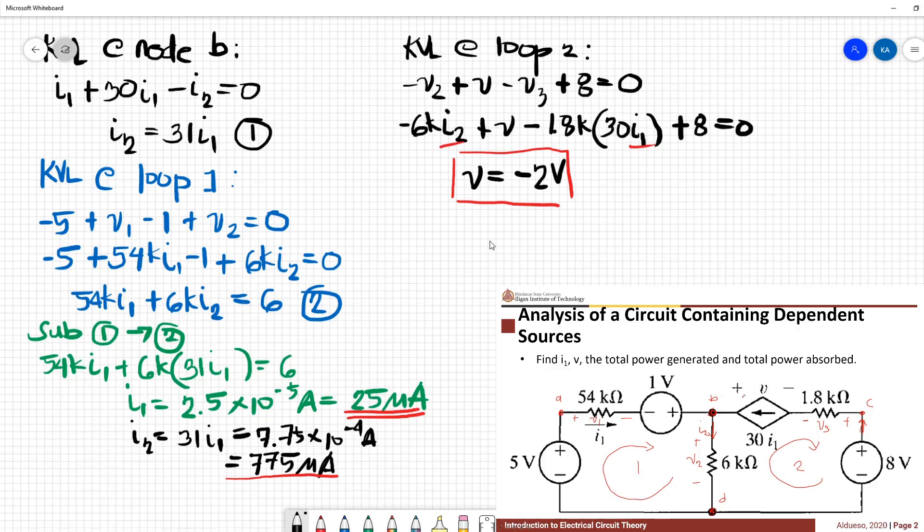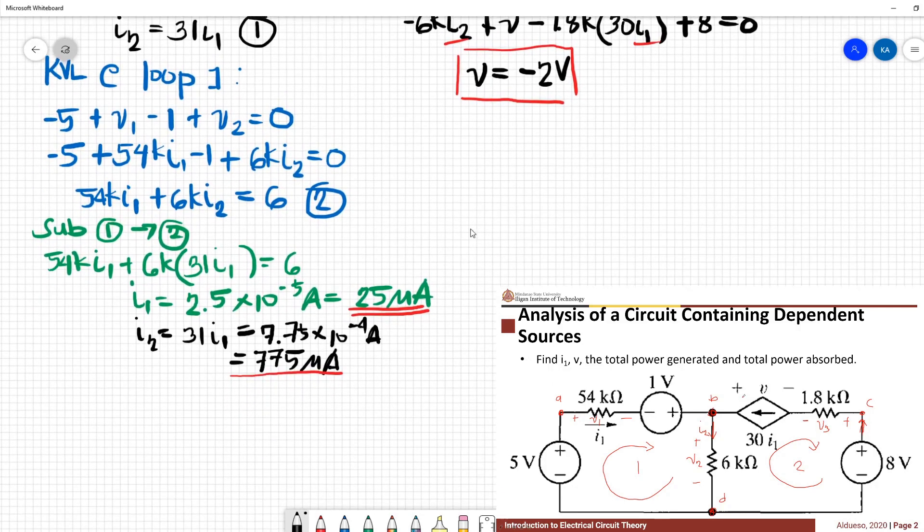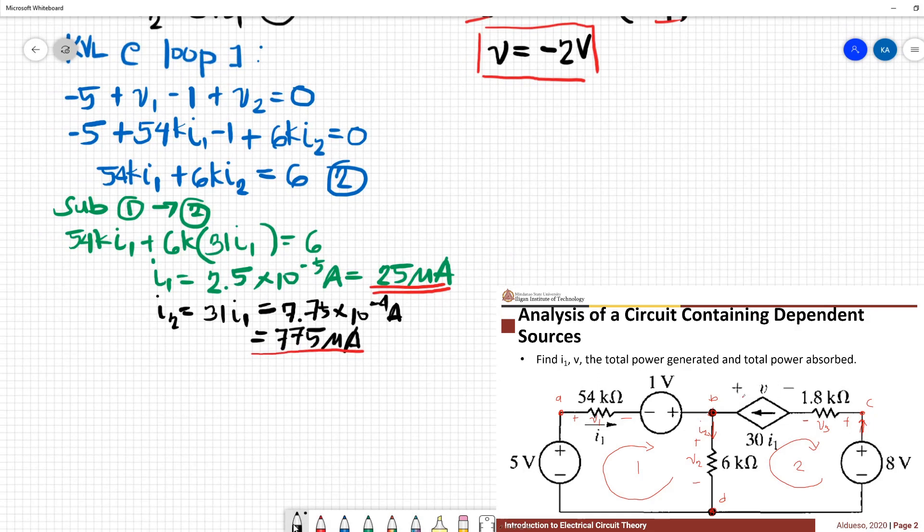So having these values, let's put these values here. i1 equal to 25 microamperes, i2 equal to 25 microamperes, and v is equal to 22 volts.